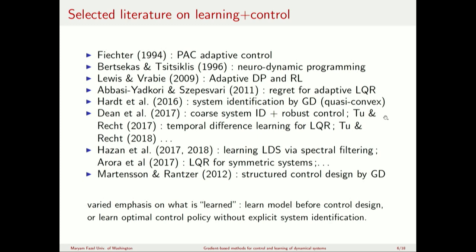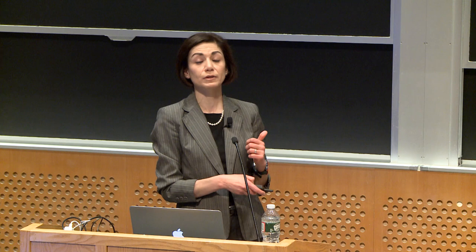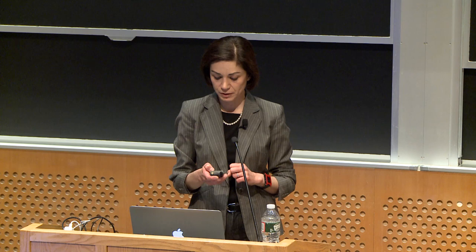There is a large literature on connecting learning and control, covering various lines of work: controlling a system while learning it, learning a model first and then designing the controller, and designing structured controllers. Perhaps closest to our work is the last one — designing structured controllers where certain Kij entries in K must be zero, for example due to sparsity constraints. That prior work uses gradient descent on the controller K empirically and gets good performance, but has no theory about optimality or rates of convergence.